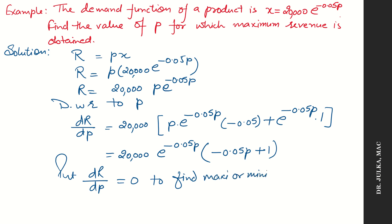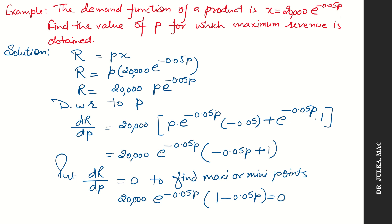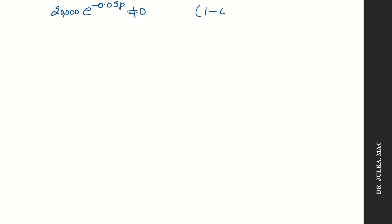In order to find maximum or minimum points, put the first derivative equal to 0. We get 20,000 multiplied by e raised to the power minus 0.05p into (1 minus 0.05p) equals to 0. We know that 20,000 into e raised to the power minus 0.05p is not equal to 0, so 1 minus 0.05p equals to 0. After calculation, we get the value of p equals to 20.